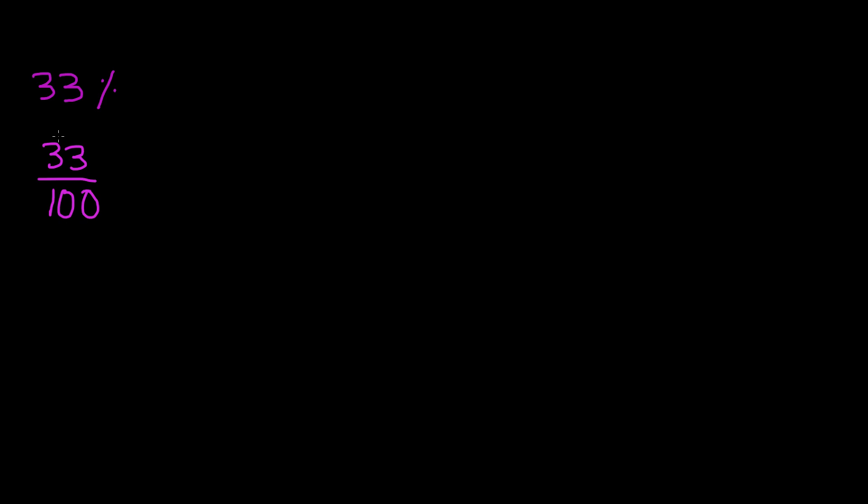Well, because whenever your numerator, which is your top number—this is your numerator, and this will be your denominator. So if your numerator is less than your denominator and you're dividing them, you will always get a decimal number. That's how it is in math. So if you divide 33 by 100, let's go ahead and do a division over here.